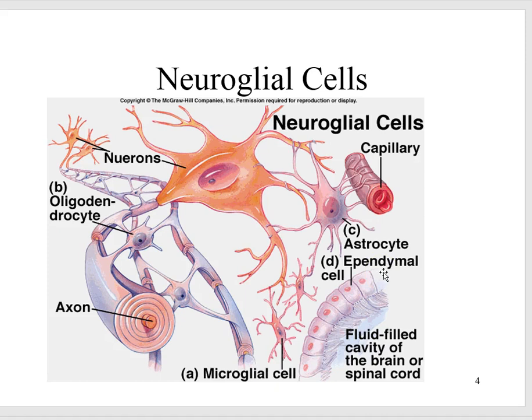We have what's called a blood-brain barrier. This is a protective feature of astrocytes. It regulates the entry of potentially harmful agents from the blood to the nerve cells.